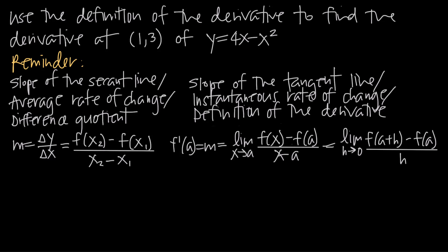In this video, we're talking about the difference quotient versus the definition of the derivative. We want to talk about the differences between the two. In this particular problem, we've been asked to use the definition of the derivative as opposed to the difference quotient — specifically to find the derivative of the function y equals 4x minus x squared at a given point.